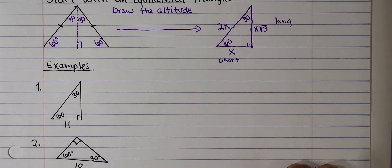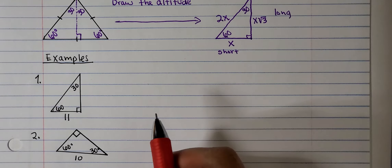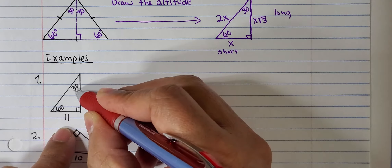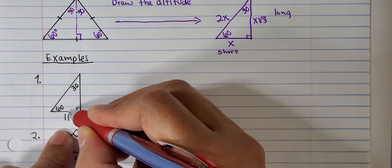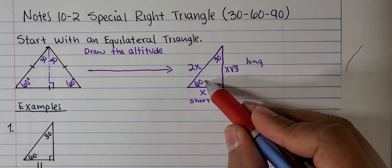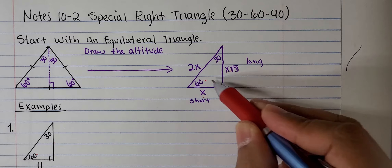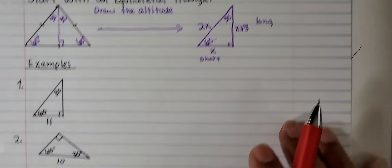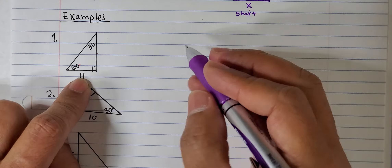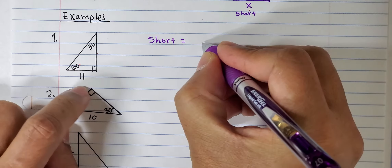In example number one, we are given the leg opposite to the 30 degree angle, which is the short leg. The leg opposite to the 60 degree angle is the long leg. The hypotenuse is always opposite the right angle. In this problem, the short leg is given with a length of 11.